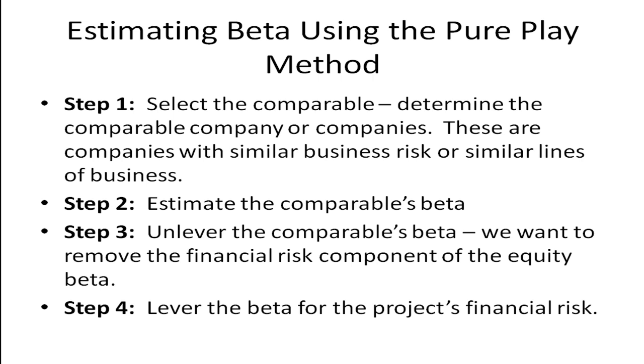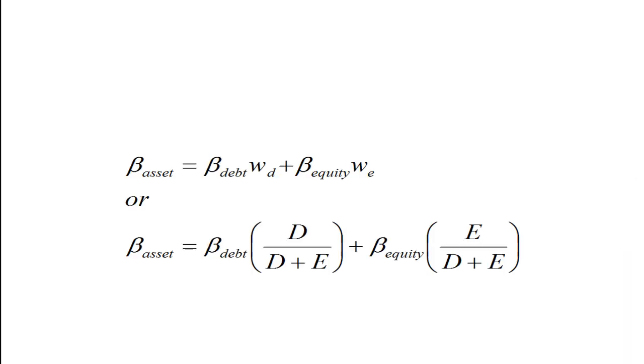We'll estimate the comparables beta, and then we want to unlever the comparables beta because we want to remove the financial risk component of the equity beta. The equity beta is made up of financial risk as well as business risk. And then what we're going to do is we're going to lever the beta for the project's financial risk, for our project's financial risk. Now, to get the weighted average cost of capital, we need to have the beta for assets. And that's just going to be a weighted average of the betas for debt and equity that the firm has.